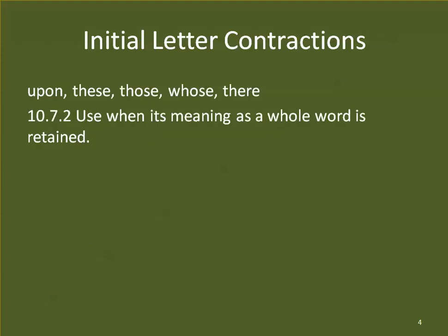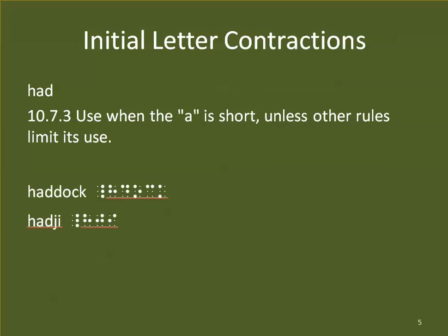One group of initial letter contractions is the dot 4-5 contractions. Upon, those, whose, and their — we can use them whenever their meaning as a whole word is retained. 'Had' — we can use it whenever the A is short, unless other rules limit its use. This was always in hot debate in the old code, but in UEB, as long as the A is short, we can use it — so Haddock and Hadji have the H-A-D contraction.